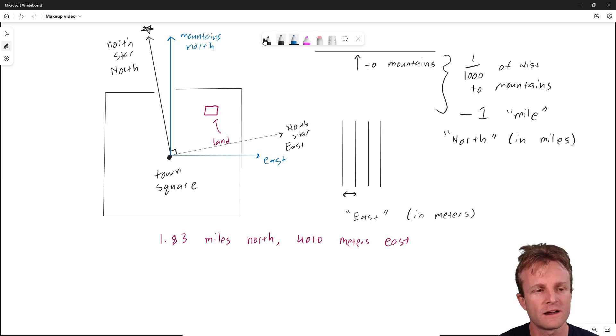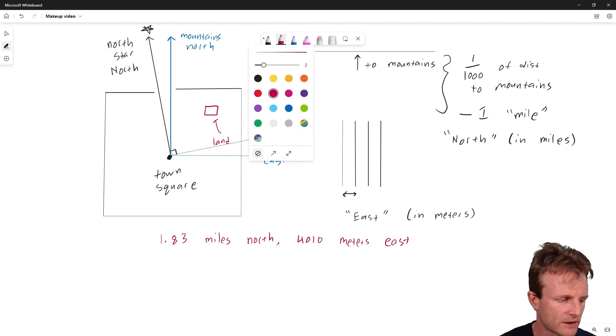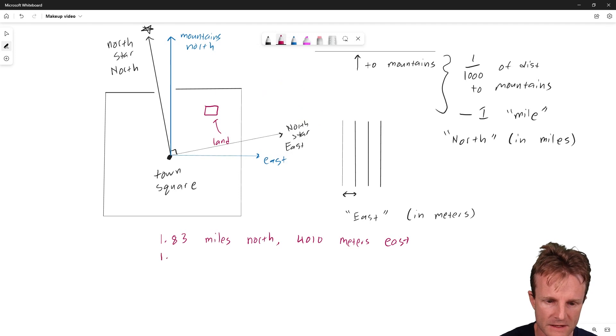And so over the years, they got slightly different answers when they did their measurements, the day timers and the night timers, but they chalked it up to measurement errors. So for example, for this particular plot of land, the night timers decided it was 1.88 miles north and 3950 meters east. So these were the two measurements according to the people awake during the day, the day timers, and the people awake during the night, the night timers.